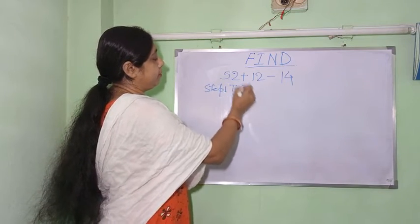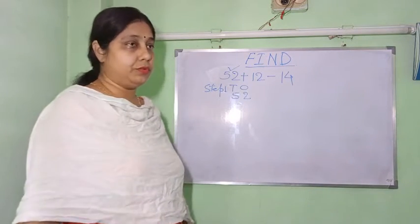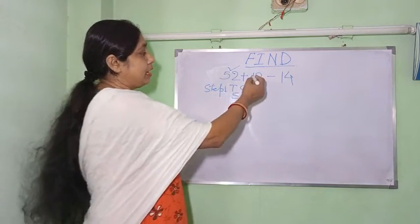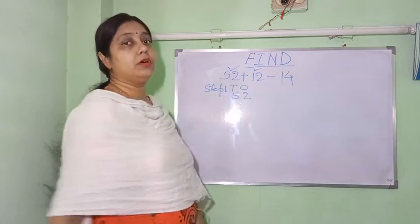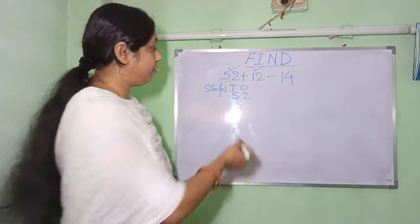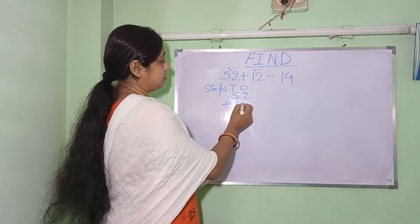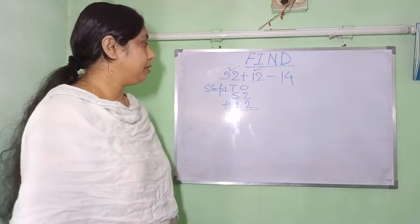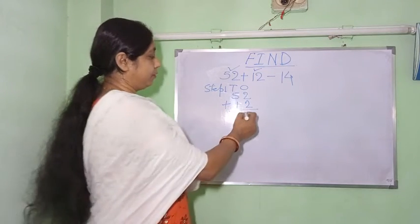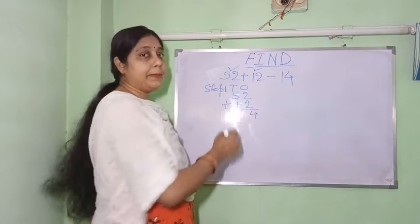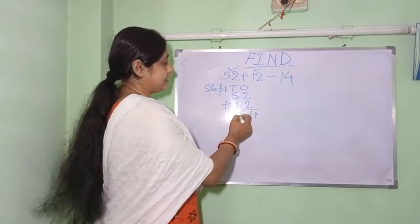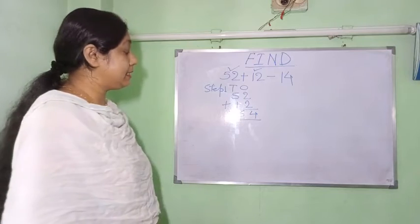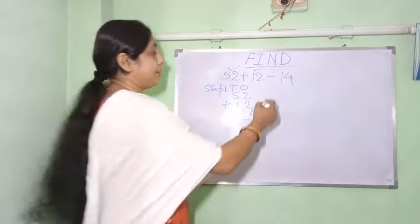In step 1, we copy down 52 and write plus 12 below it — the plus sign belongs to 12. Now we add: 2 plus 2 is 4, and 5 plus 1 is 6, so after adding 52 and 12 we get 64.